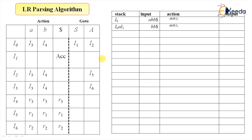Now we check i3 on input 'b'. Looking at the table, state i3 on input 'b' goes to state i4, and that action is a shift action — shift i4. So i3 on input 'b' goes to state i4, which is again a shift action.